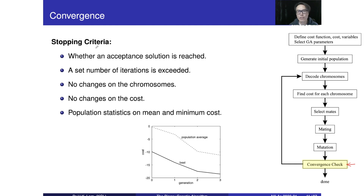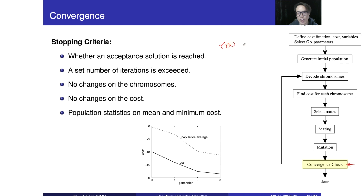We have a lot of ways to tell whether the process is going to stop or not. For example, whether a feasible or acceptable solution is found. If we would like to find f(x) that is less than, say, minus 10 — if we reach a solution x which gives a cost that is less than minus 10, then we are going to stop.